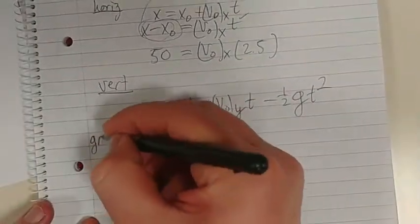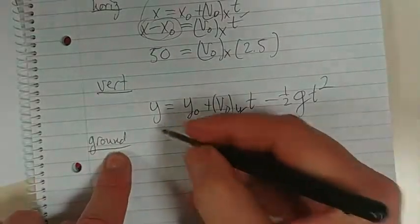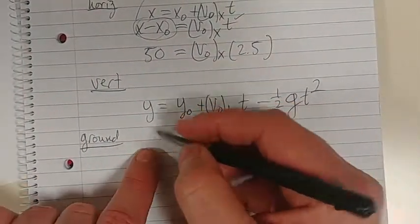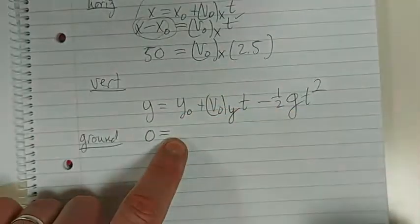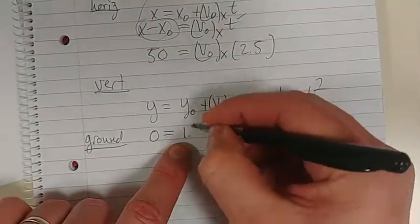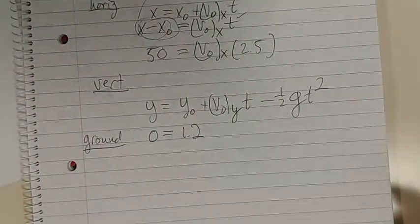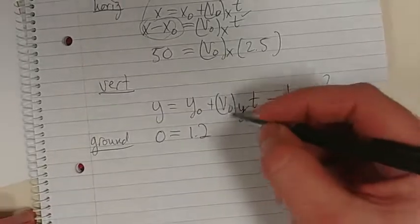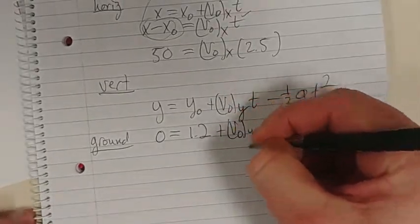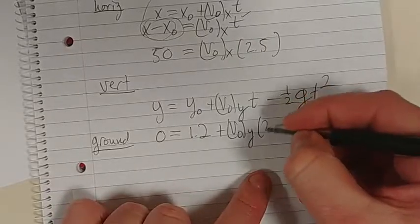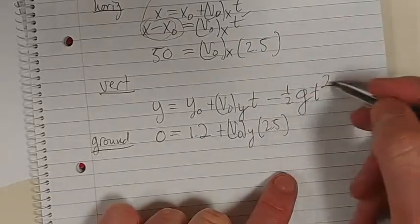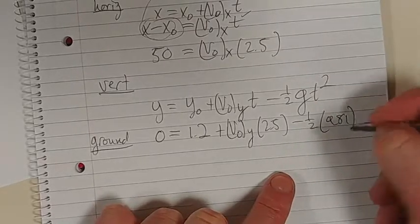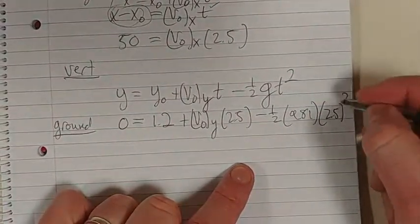So from the ground, what is my final Y position? From the ground, my final Y would be zero. What's my initial Y? 1.2. And what is my V0? We don't know. What is my time? It's 2.5 seconds. And we plug all this in minus half, 9.81, 2.5 squared.